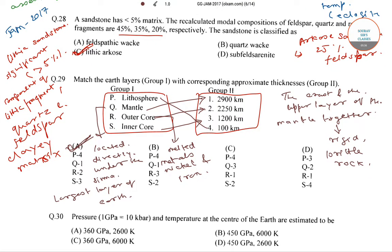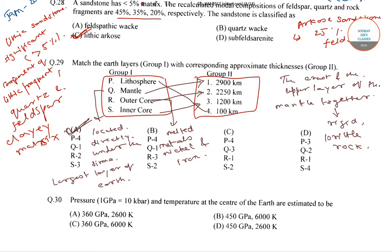Now let's move to the next question. In this question, we have to find out the pressure and temperature at the center of the earth. The correct answer is option number C. That is, the pressure is 360 GPa, where 1 GPa is equal to 10 kbar. And the temperature at the center of the earth is estimated to be 6,000 K. So the correct answer is option number C, that is the pressure of 360 GPa and the temperature of 6,000 K.